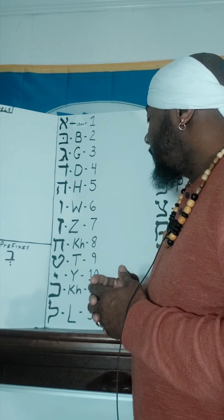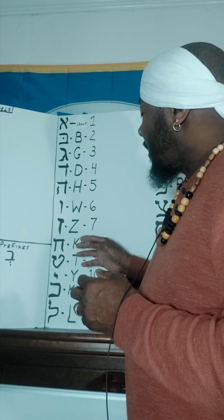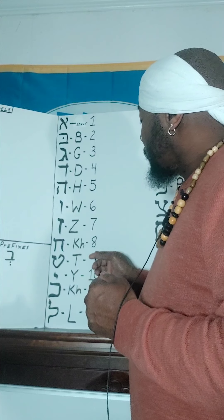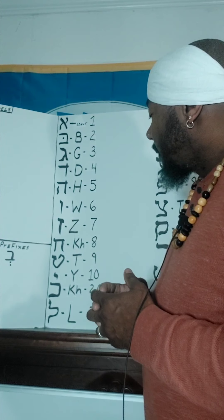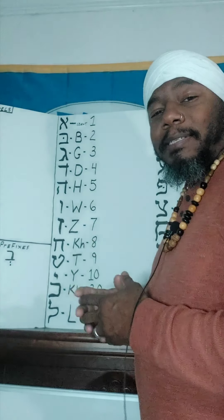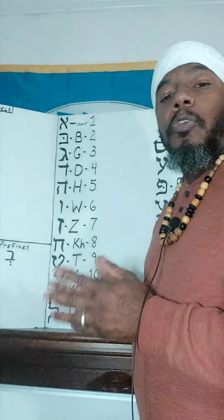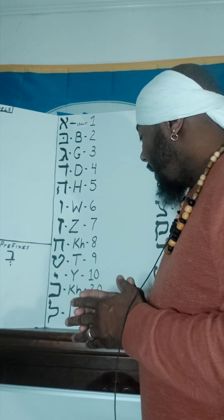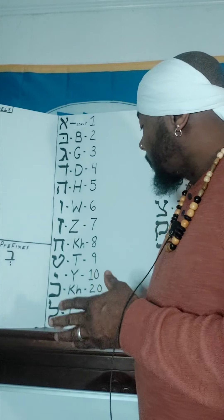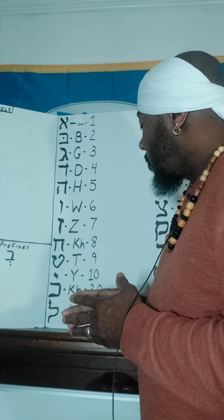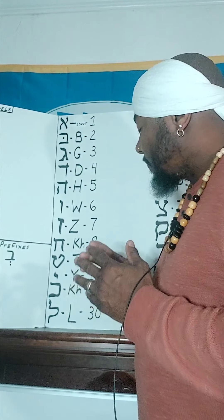The next letter is the Ket or Het. The English equivalent will be the CH or the KH. The numeral equivalent to that is eight. The next letter is Tet. The English equivalent is the letter T. The numeral equivalent is nine. The next letter is the Yod. The English equivalent is Y. The numeral equivalent is ten.